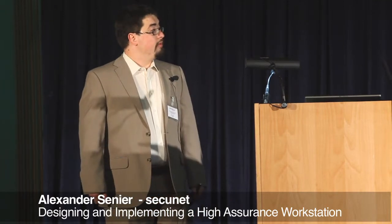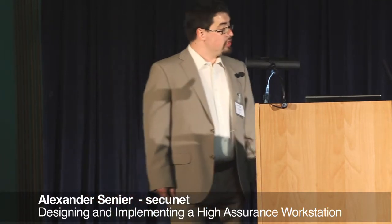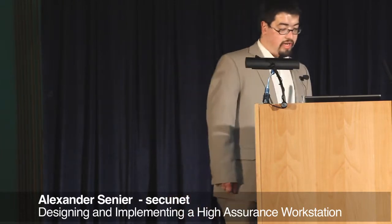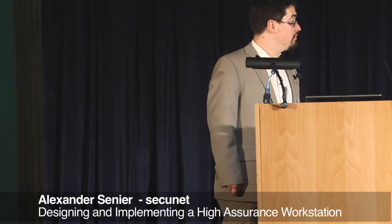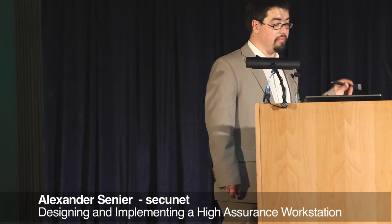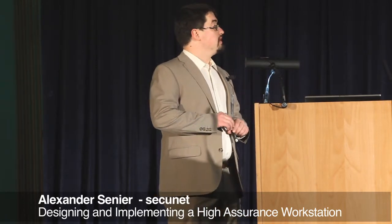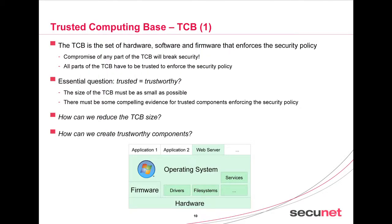The question that arises is whether the trusted parts we have are also trustworthy — and this is one key aspect in designing a security system. When you have to trust all parts of the TCB, it seems natural to decrease the size of the TCB and to create some evidence that components in the TCB really fulfill their purpose. So the question becomes: how can we reduce the TCB size and create trustworthy components?